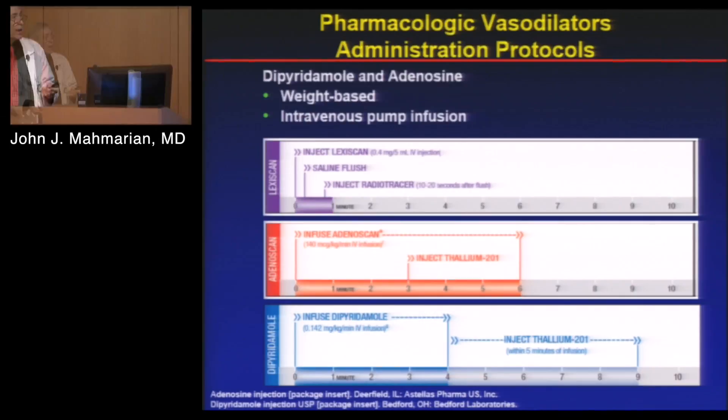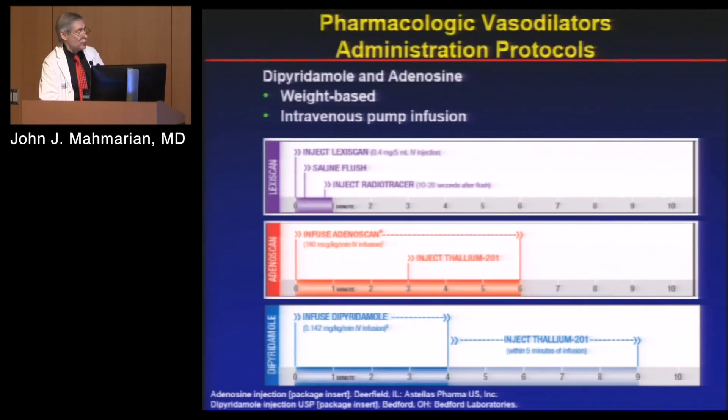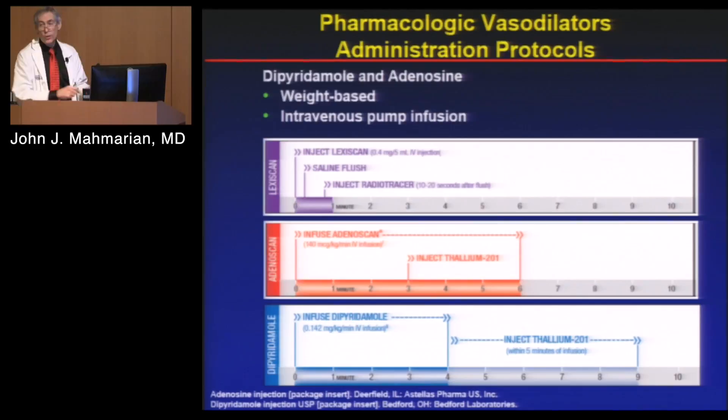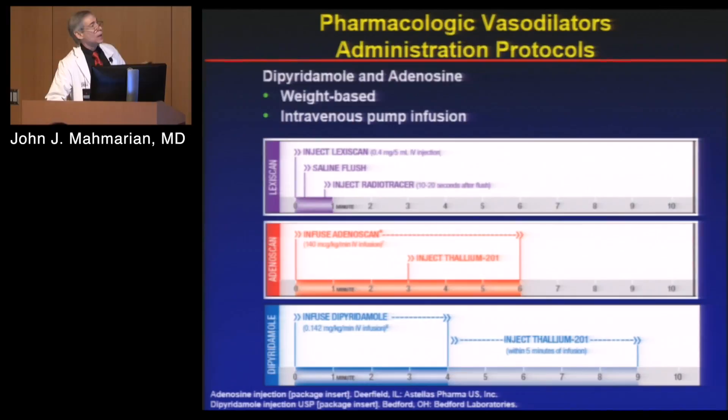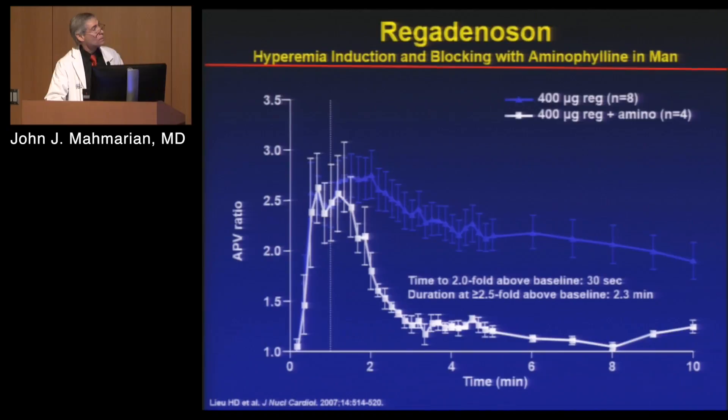In terms of giving these agents: dipyridamole is infused over four minutes then you inject your radiotracer. Not many people use dipyridamole anymore. With adenosine, we used to give a six-minute infusion and inject the radiotracer mid-infusion. With regadenosine, it's very convenient — give regadenosine as a bolus, give a flush, give the radiotracer, all done within a minute. No pumps, no mess, not weight-based. Regadenosine gives similar hyperemic effects as exercise, increasing flow about two and a half to threefold.